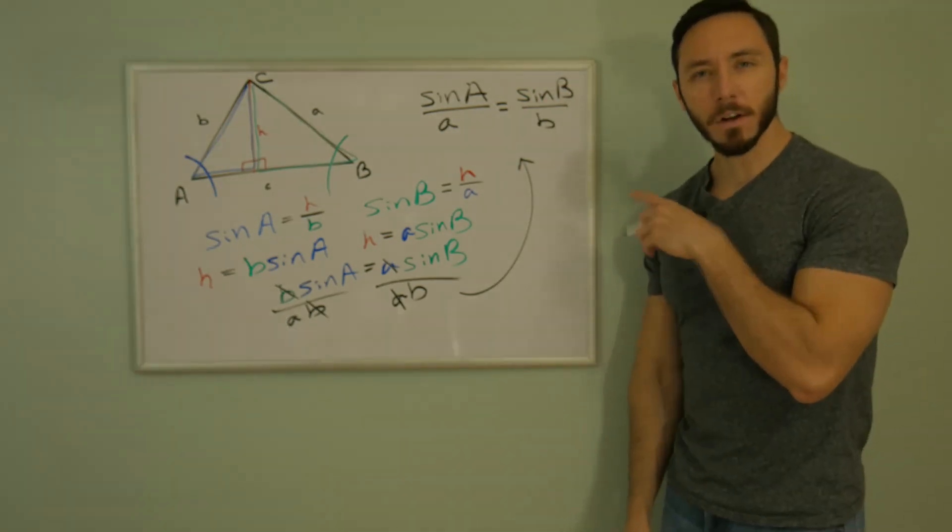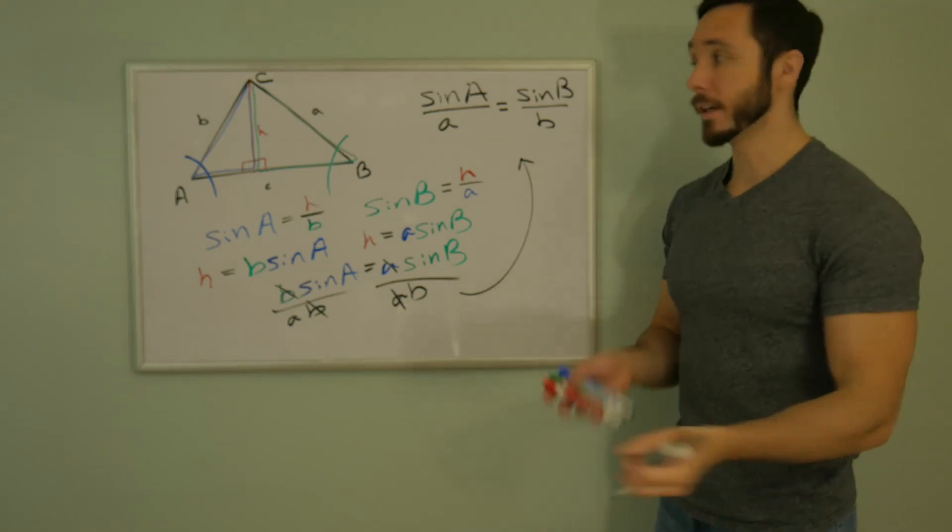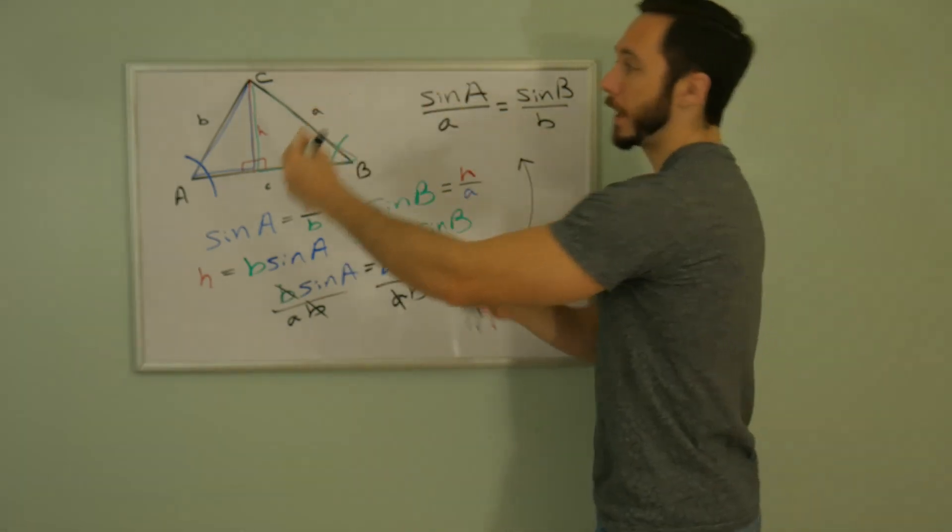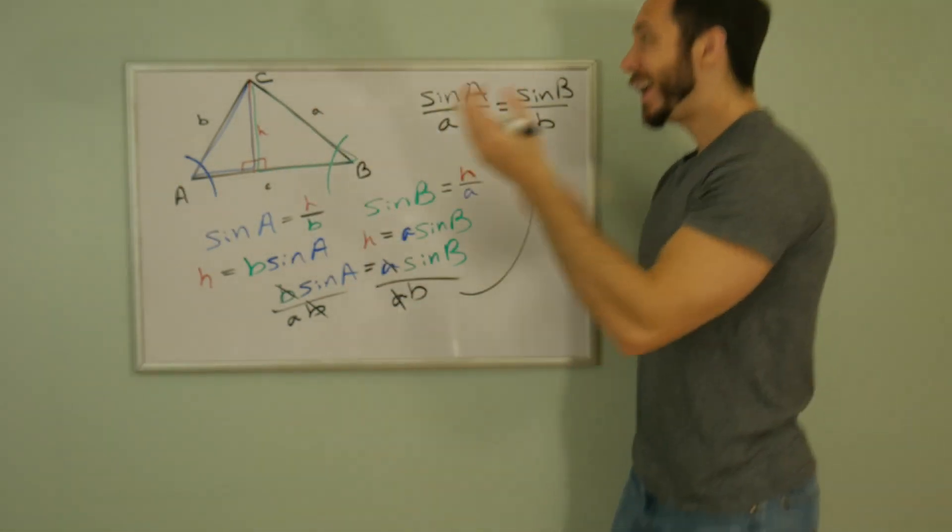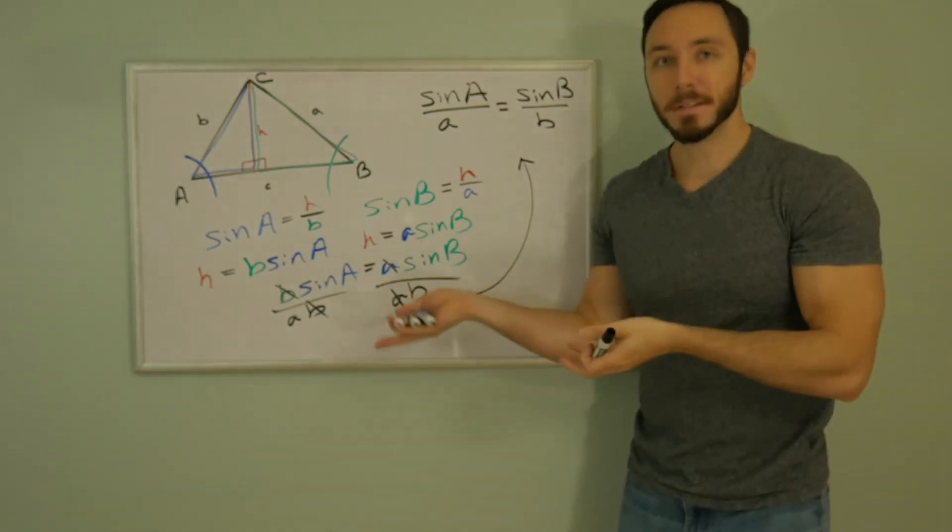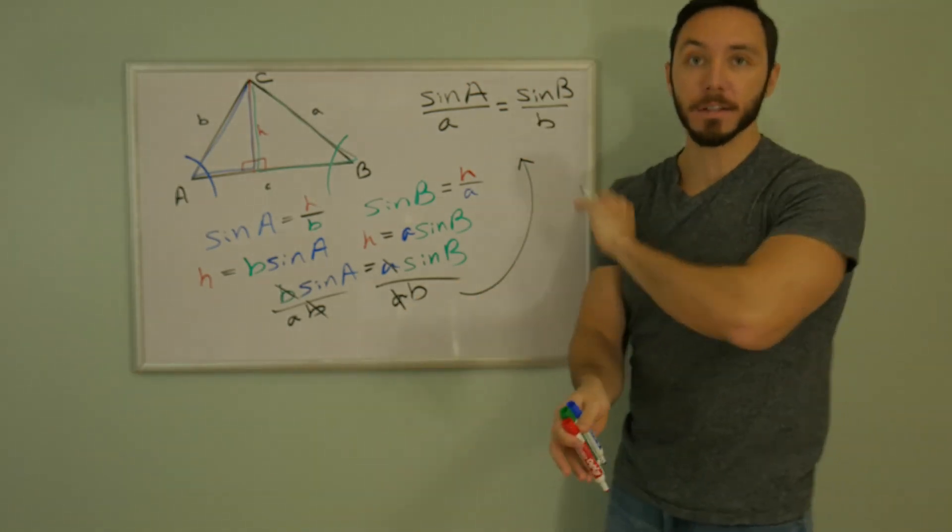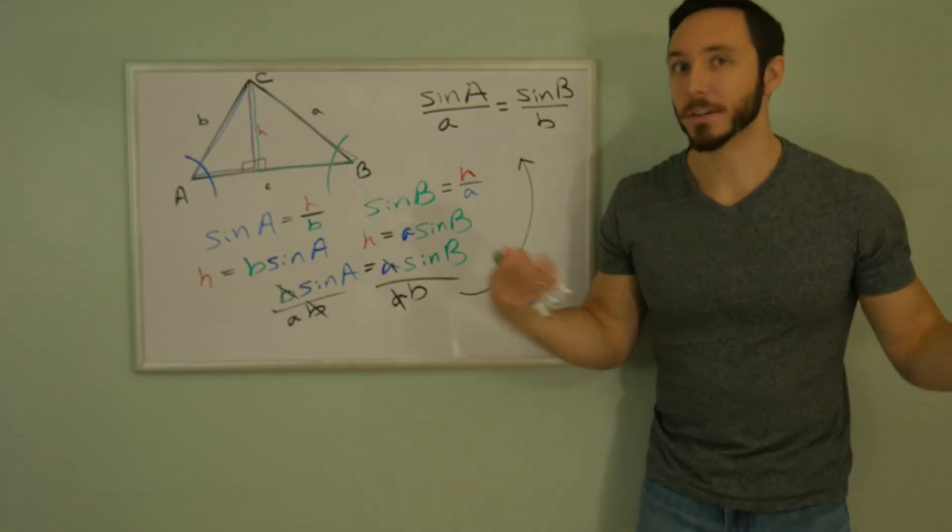We're missing that sine of big C over little c, right? Kind of not really. You can just rotate that triangle, extend another altitude, and you get the same exact idea. This is it. This is the proof. We can tack on that sine of big C over little c by the same exact reasoning.